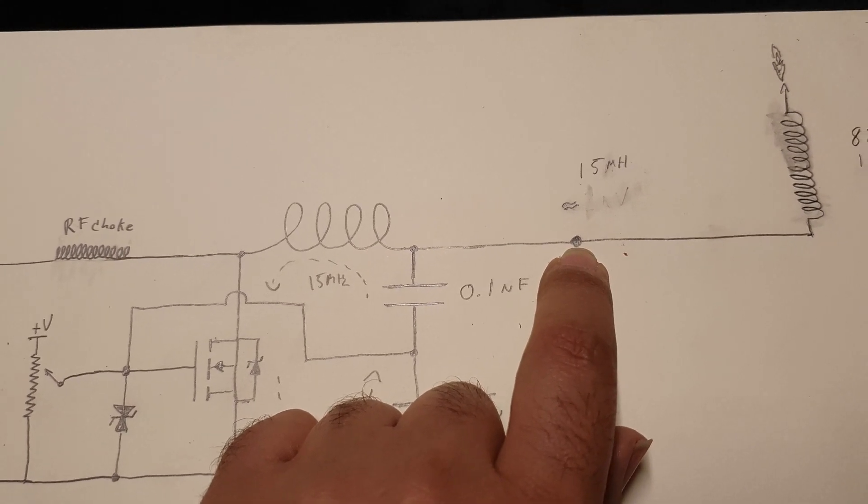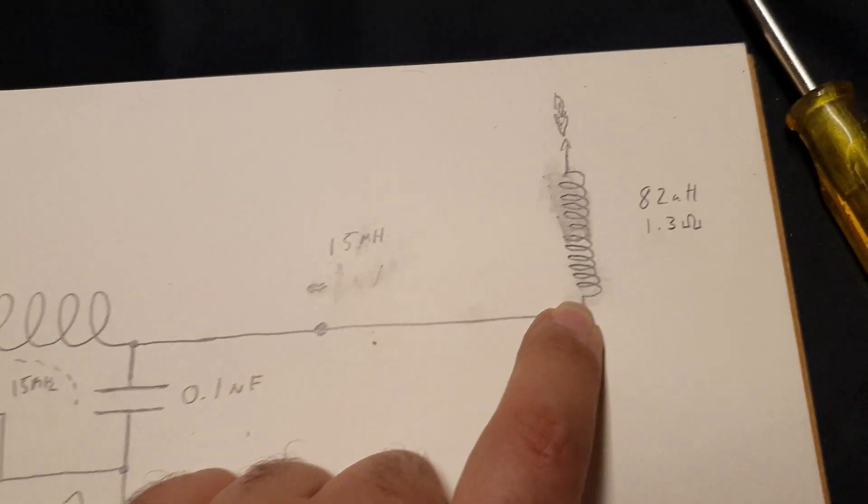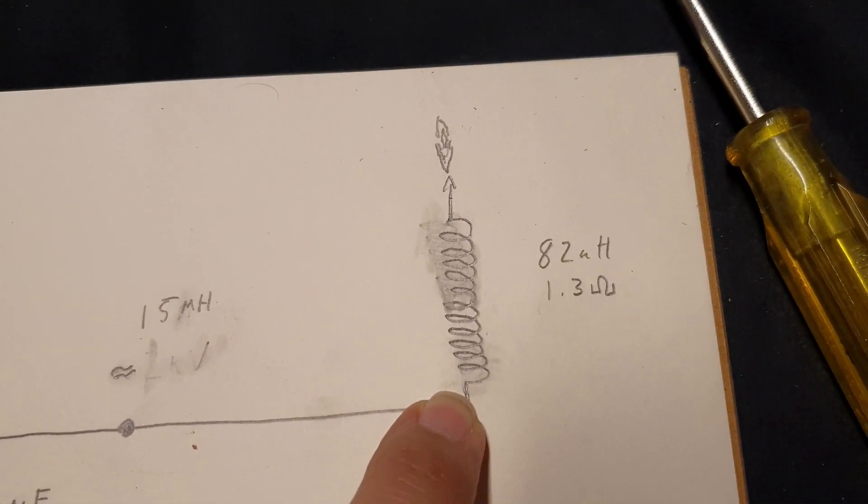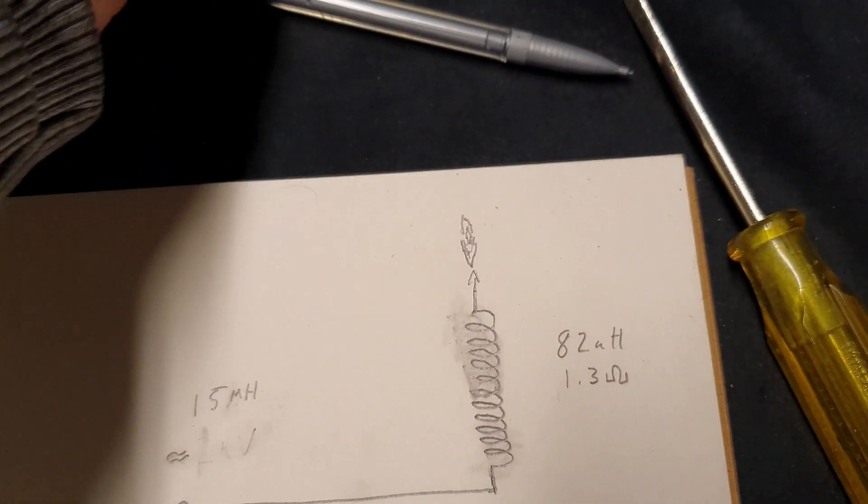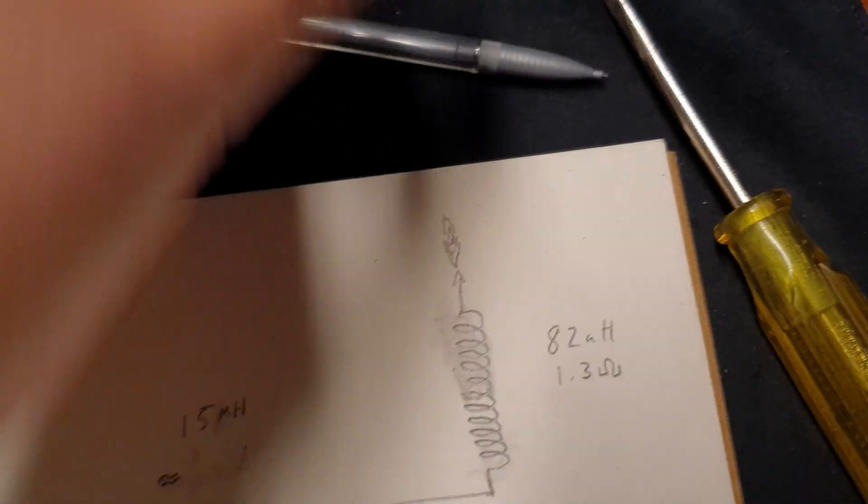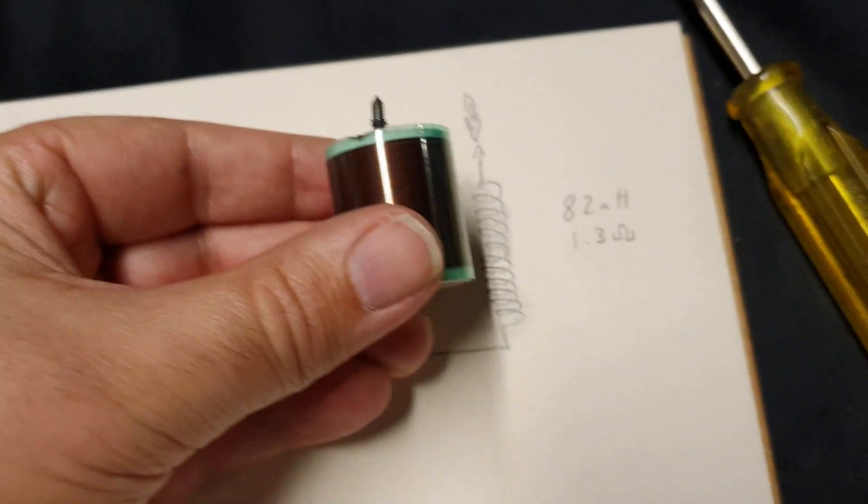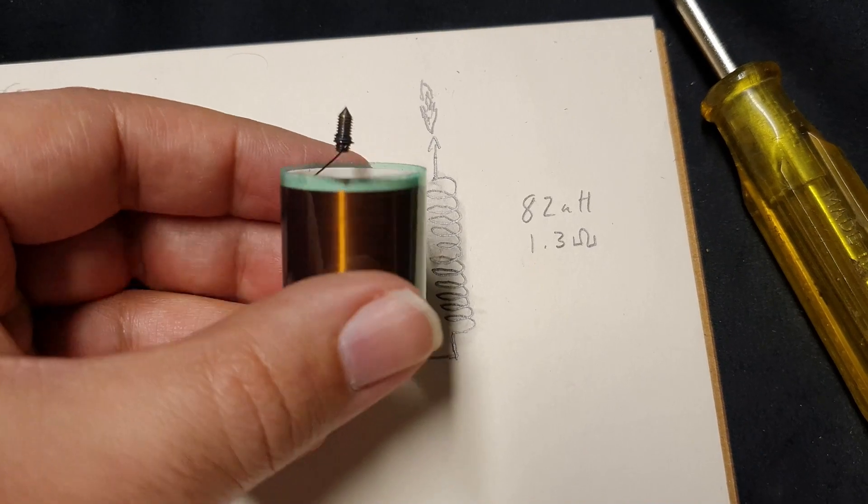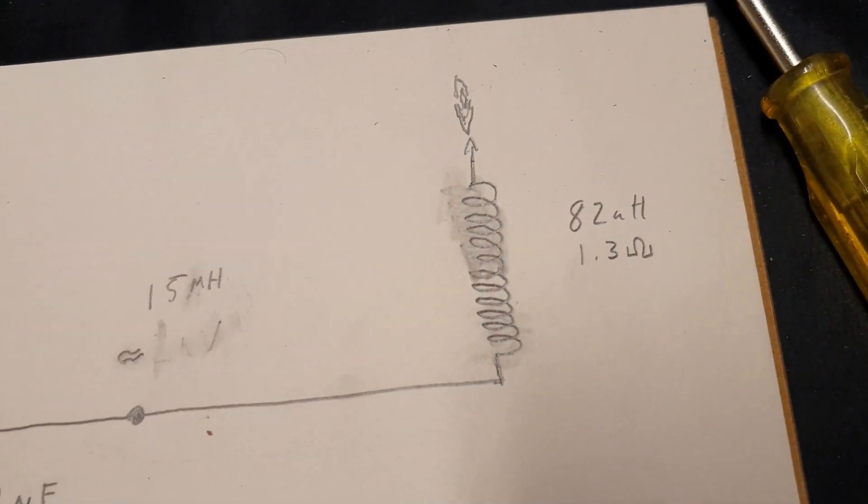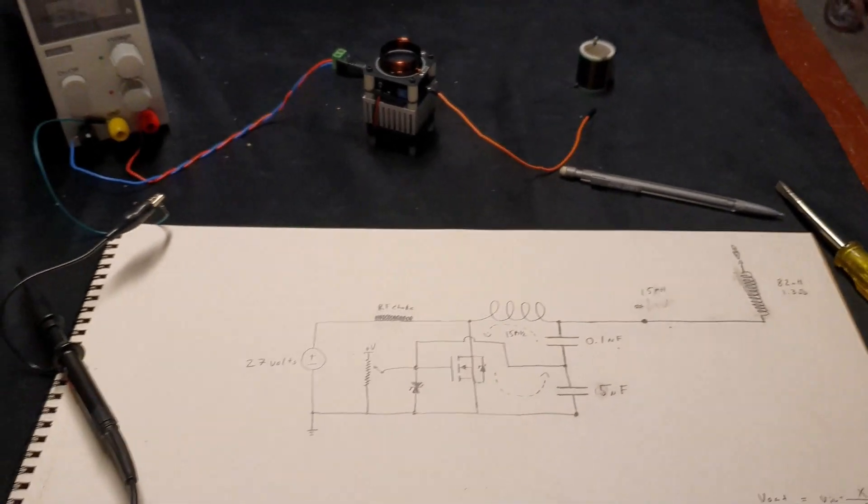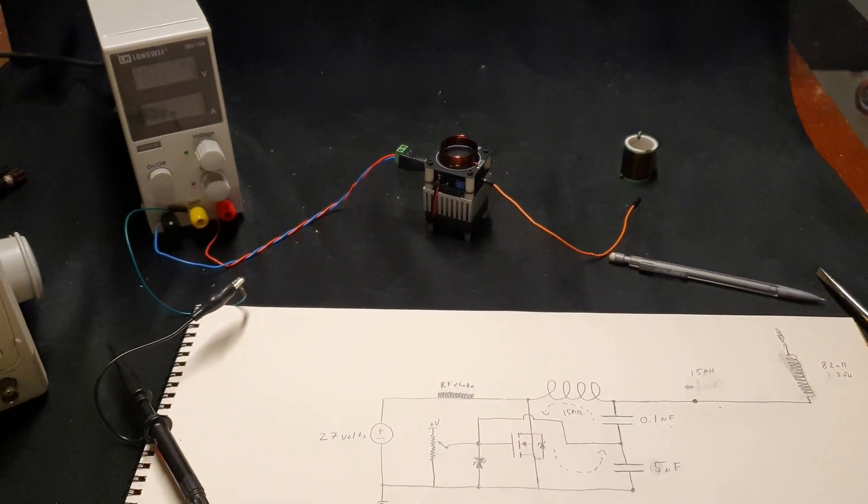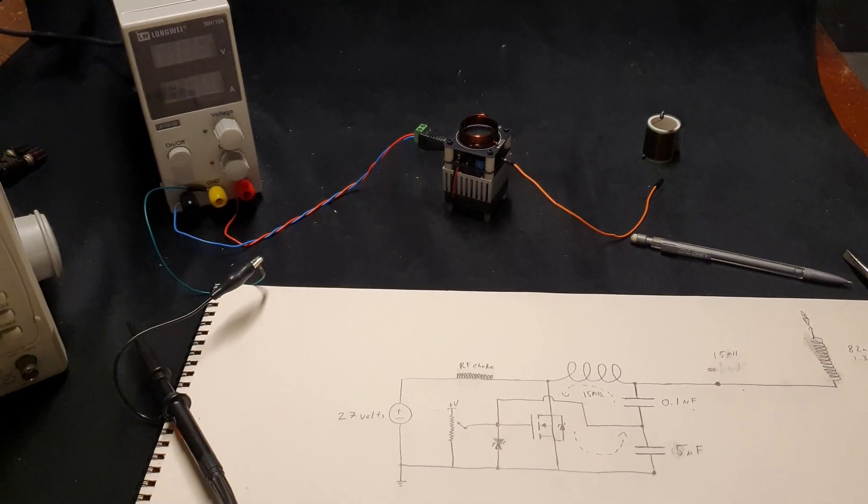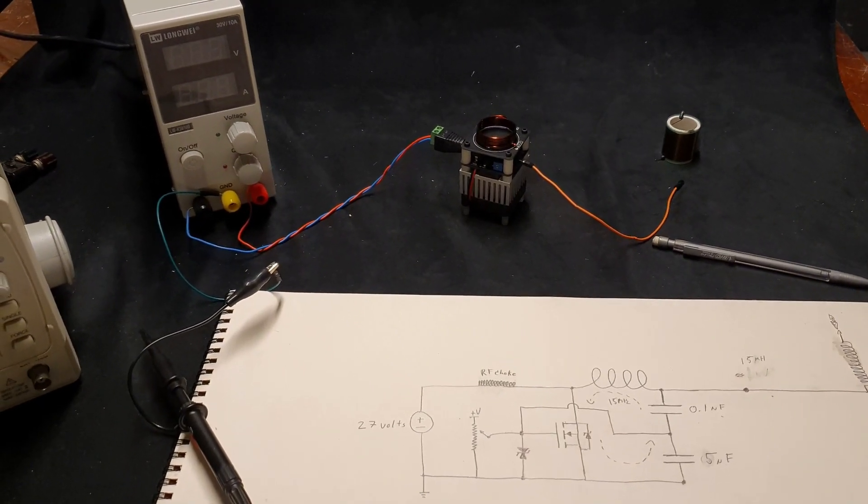And it feeds the base of our Tesla coil magnifier coil here, which I've measured to be 82 micro Henrys with a resistance of 1.3 ohms. So I hope this is helpful for your Tesla coil magnifier kit troubleshooting efforts.